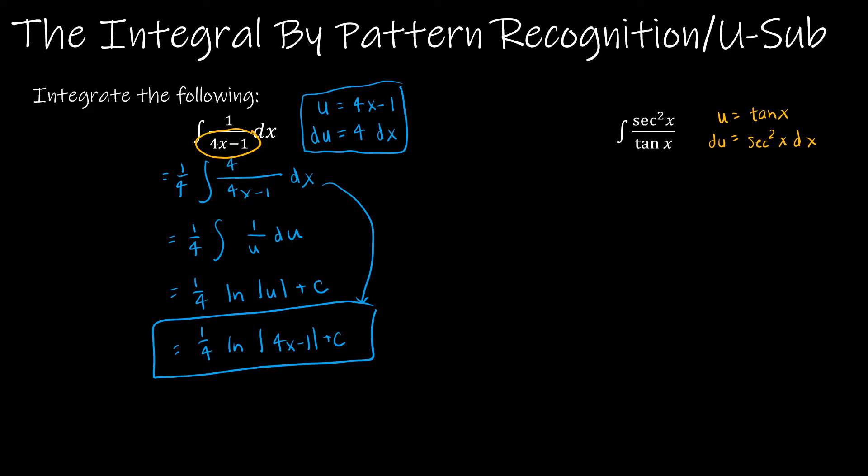Even though I didn't have to fit a pattern, I see that it already does fit the pattern. This really is 1 over u du, because I already have everything that I need. So I don't have to multiply by a fourth like I did on the last one. Everything is exactly how it's supposed to be. I just am going to get the natural log of the absolute value of u plus c. And then I get the natural log of the absolute value of tangent x plus c.